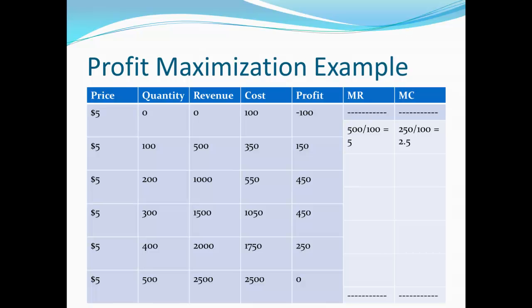Let's walk through an example of how to maximize profit using the Output Rule. For the Output Rule, we need to look for that quantity where marginal revenue and marginal cost are equal. So here we're going to have to calculate marginal revenue and marginal cost.